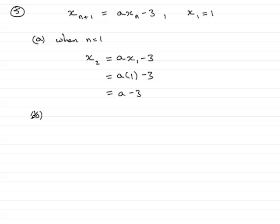Now in part b, we've got to show that the third term in the sequence, x_3, is equal to a squared minus 3a minus 3. How do we do that? Well, it's easy.